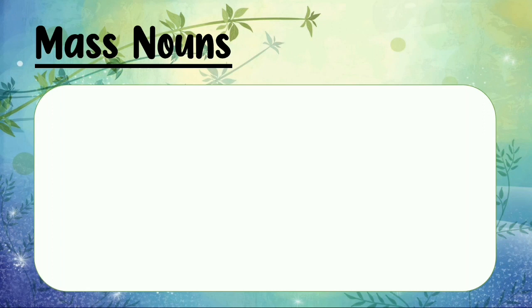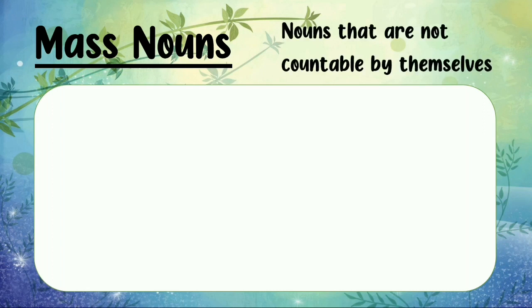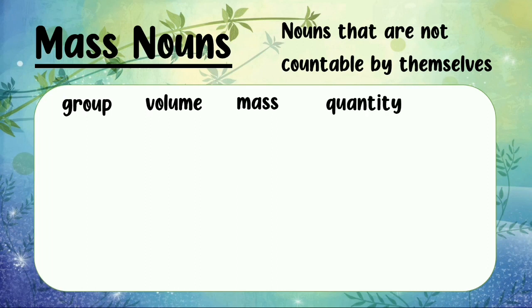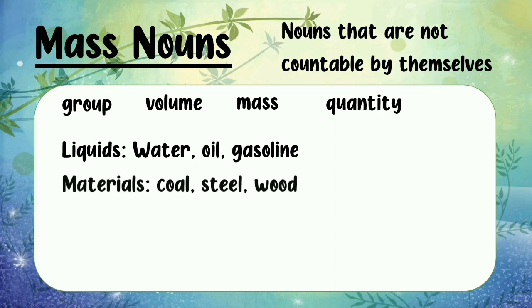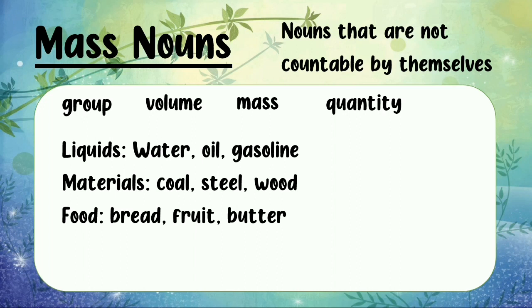Mass nouns are nouns which cannot be counted, or nouns that are not countable by themselves, because they are always treated as a group, volume, mass, or quantity. Some common mass nouns are liquids like water, oil, or gasoline. It can also be materials like coal, steel, or wood. It can also be a food like bread, fruit, or butter.